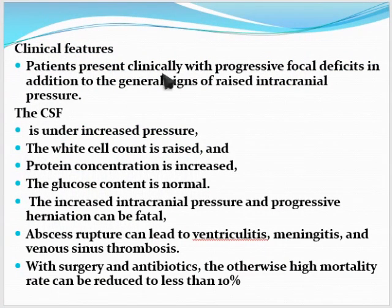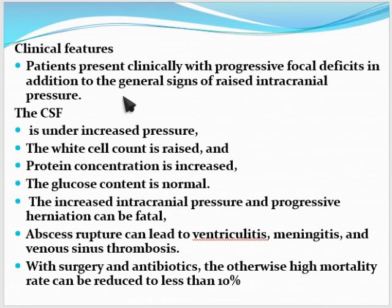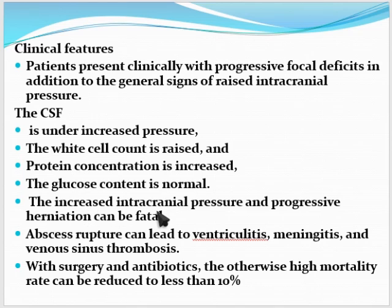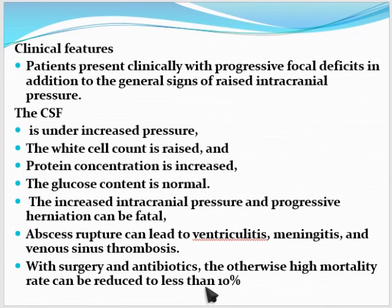Clinically, patients with brain abscess present with progressive focal deficits and general signs of raised intracranial pressure, which can lead to herniation — displacement of brain along the falx cerebri, tentorium cerebri, or foramen magnum. CSF shows increased pressure, raised white cell count, and increased protein with normal glucose. Abscess rupture can cause ventriculitis, meningitis, and venous sinus thrombosis. With surgery and antibiotics, the otherwise high mortality can be reduced to less than 10%.